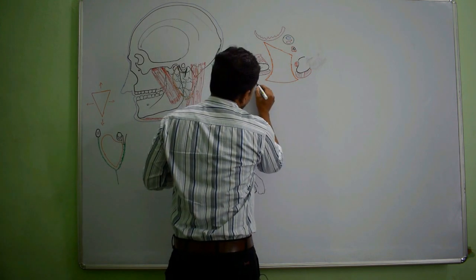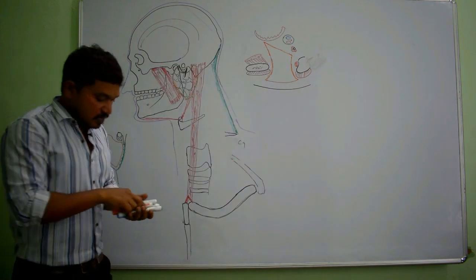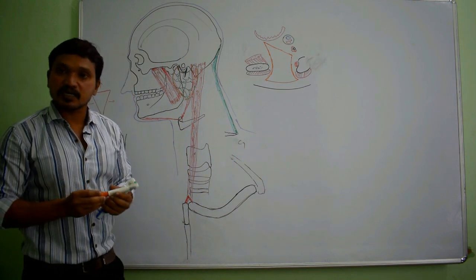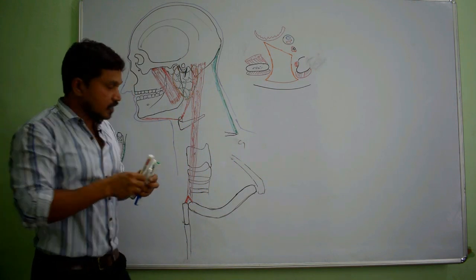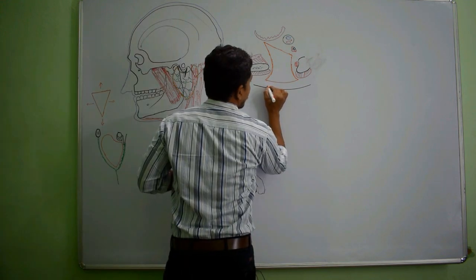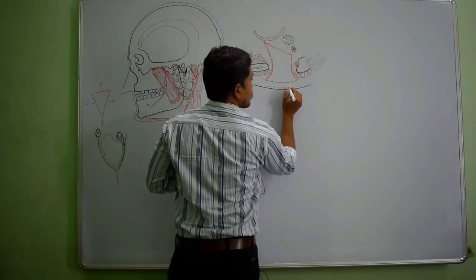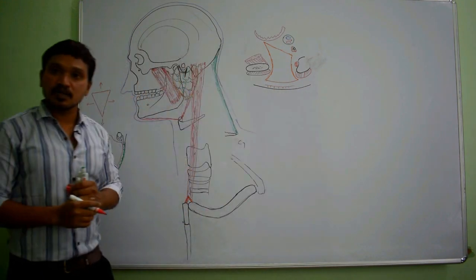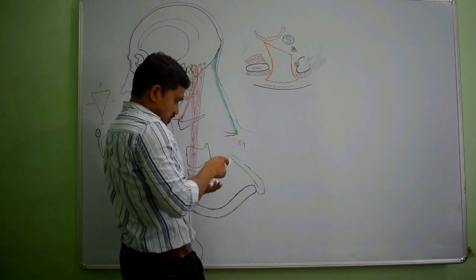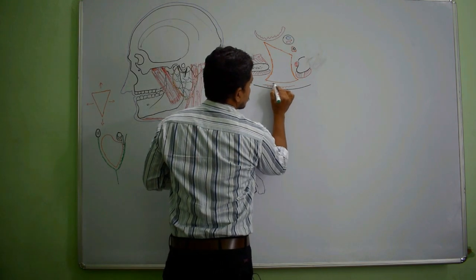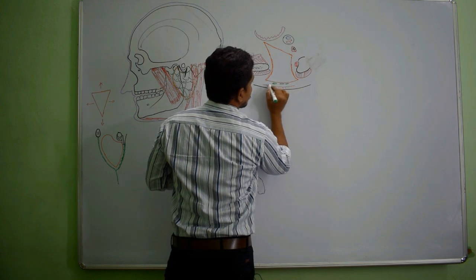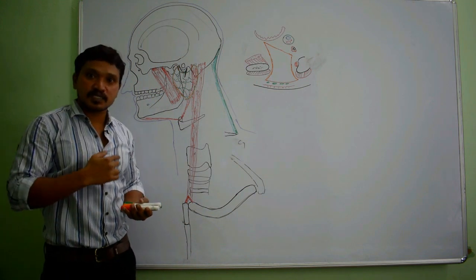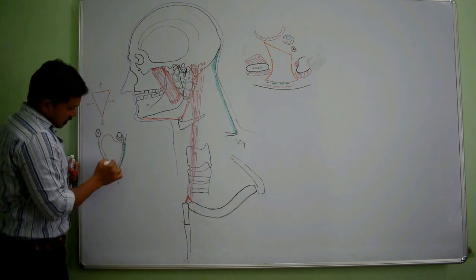The superficial surface is covered first by skin, then superficial fascia. Within the superficial fascia, there is the great auricular nerve, which supplies the skin over the parotid gland. Along with that, there is the platysma muscle and the risorius muscle. Some superficial lymph nodes are also present over it. Structures passing through the substance of the gland include the external carotid artery, which enters the gland.